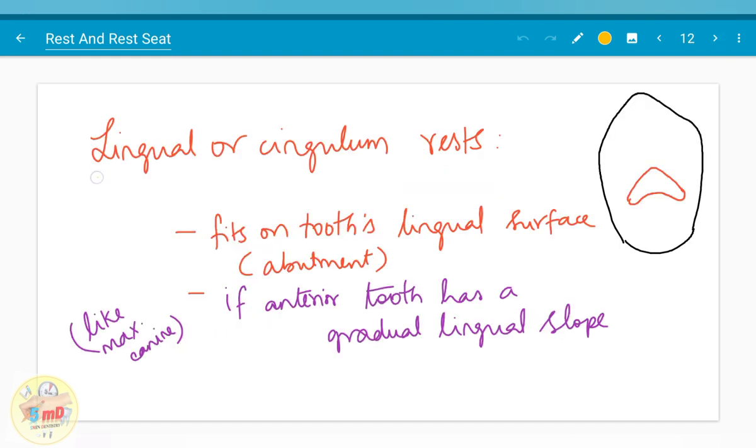Moving on to the second type of rest, lingual or cingulum rest. As you could see here, it is given above the cingulum. It fits on the tooth's lingual surface. The tooth is the abutment. It is used if anterior teeth has a gradual lingual slope like maxillary canine.